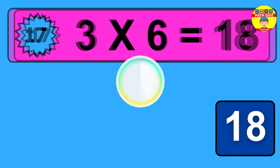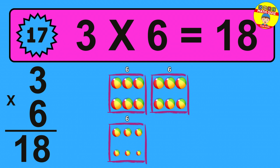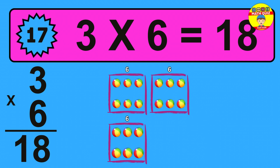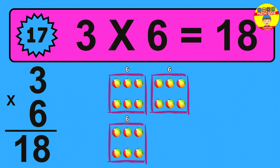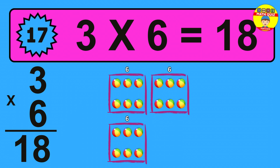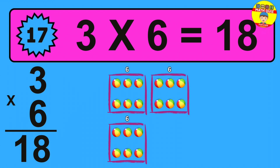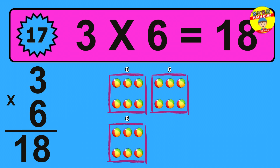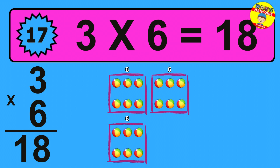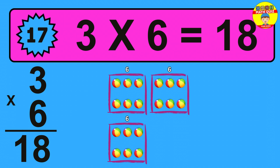Question 17: 3 times 6 equals what? The answer is 3 times 6 is 18. To calculate, we have 3 groups with 6 balls each one. So how many balls do we have? 18 balls.